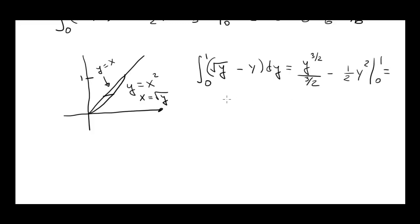And this is equal to, let's write it like this, 2 thirds y to the 3 halves minus 1 half y squared evaluated from 0 to 1.